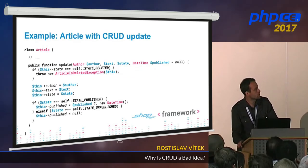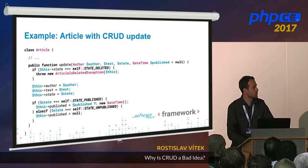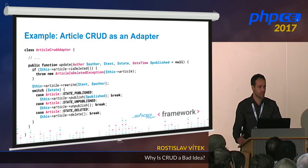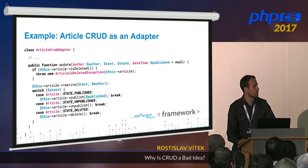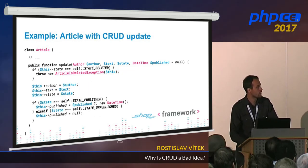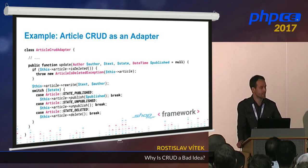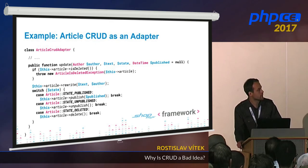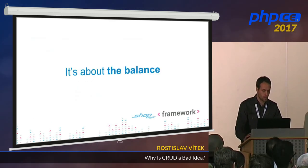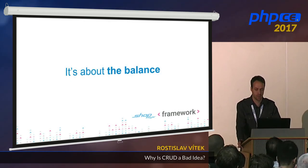Let's take a look at one example. We have the Article from the beginning of the presentation, and we can rewrite it using an adapter to use descriptive methods inside while still exposing an update method publicly. Inside it's more readable — instead of simply setting stuff, we use real-scenario methods like 'articleRewrite', and then based on the status we either publish or delete the article. As I said, it's all about balance and thinking about what is good in the concrete scenario for you.